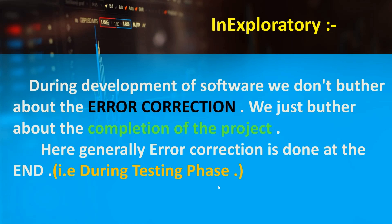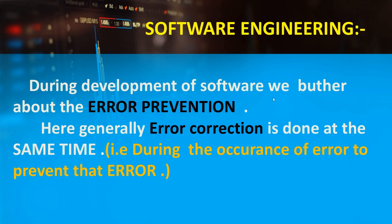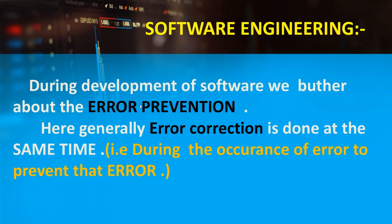The next one is the software engineering mode. In this method, during the development of software, we bother about error prevention. This means that when we see an error, we rectify it immediately to prevent future problems.